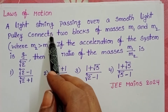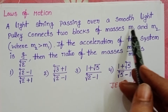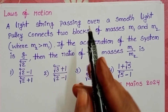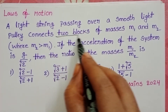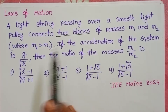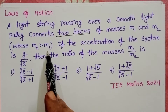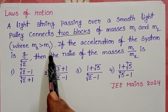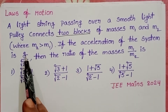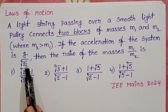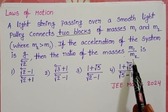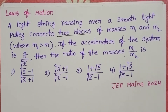A light string passing over a smooth light pulley connects two blocks of masses M1 and M2, where M2 is greater than M1. If the acceleration of the system is g divided by square root of 2, then the ratio of the masses M1 by M2 is to be found.